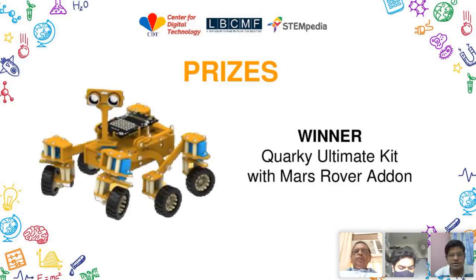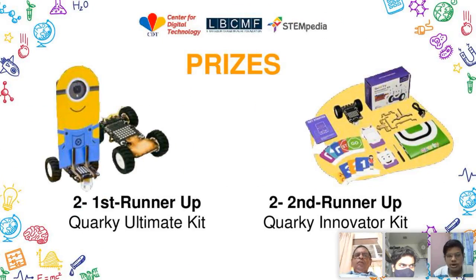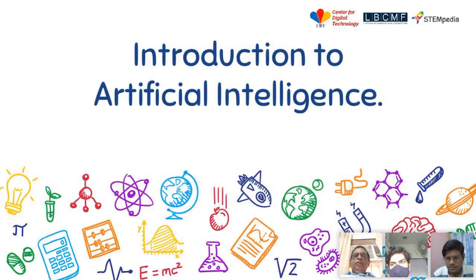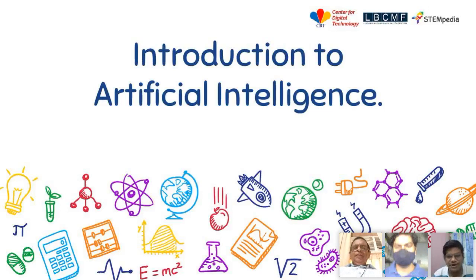Now let's talk about the prizes. The first prize is the Quarky Ultimate Kit with Mars Rover add-on, with which you can make almost 30 to 40 good projects. There will be two runner-ups awarded this kit, two second runner-ups awarded with the Quarky Innovative Kit, and five consolation prizes of the Quarky Explorer Kit. I'd like to show you a short video of these prizes, and then we'll move ahead with the introduction to artificial intelligence.